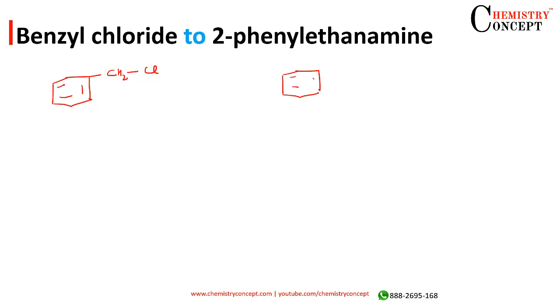Now, what will be the structure of 2-phenylethanamine? It will be CH2, CH2, NH2.